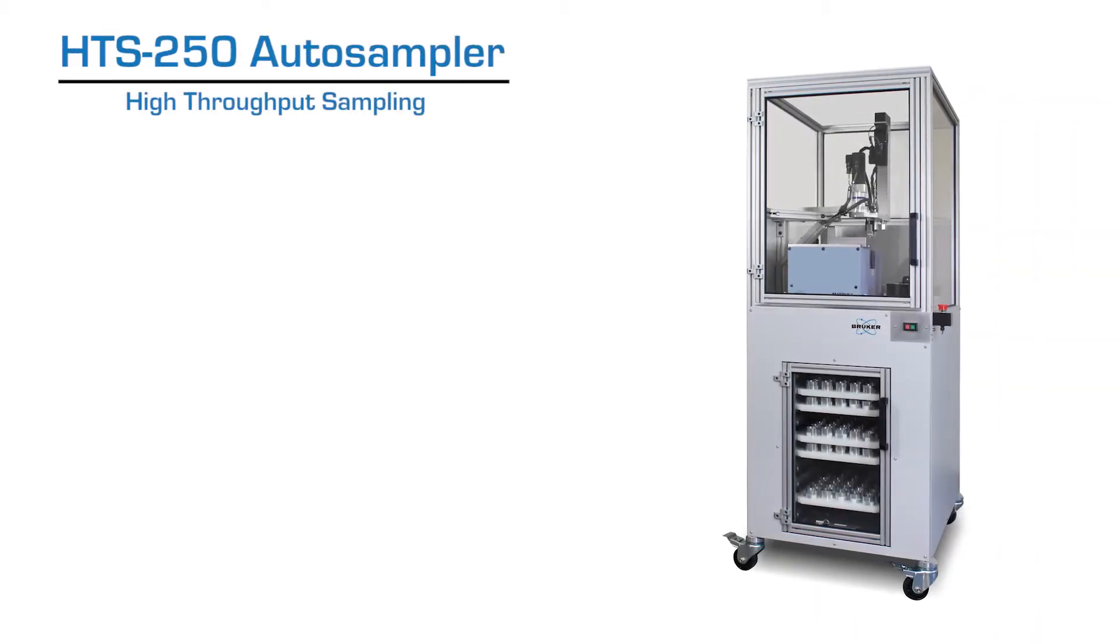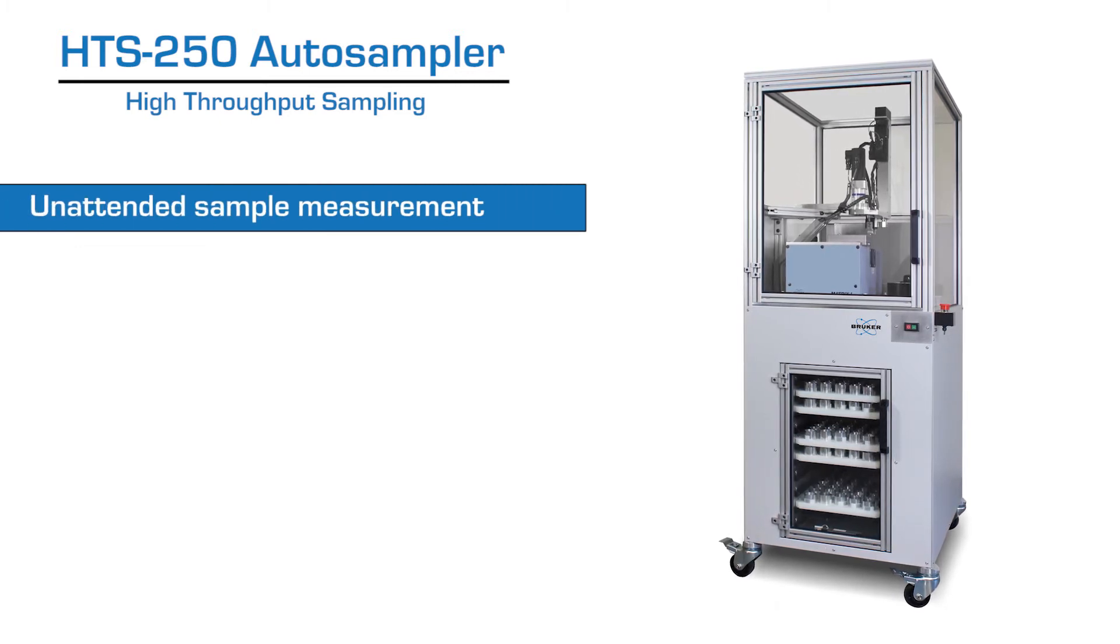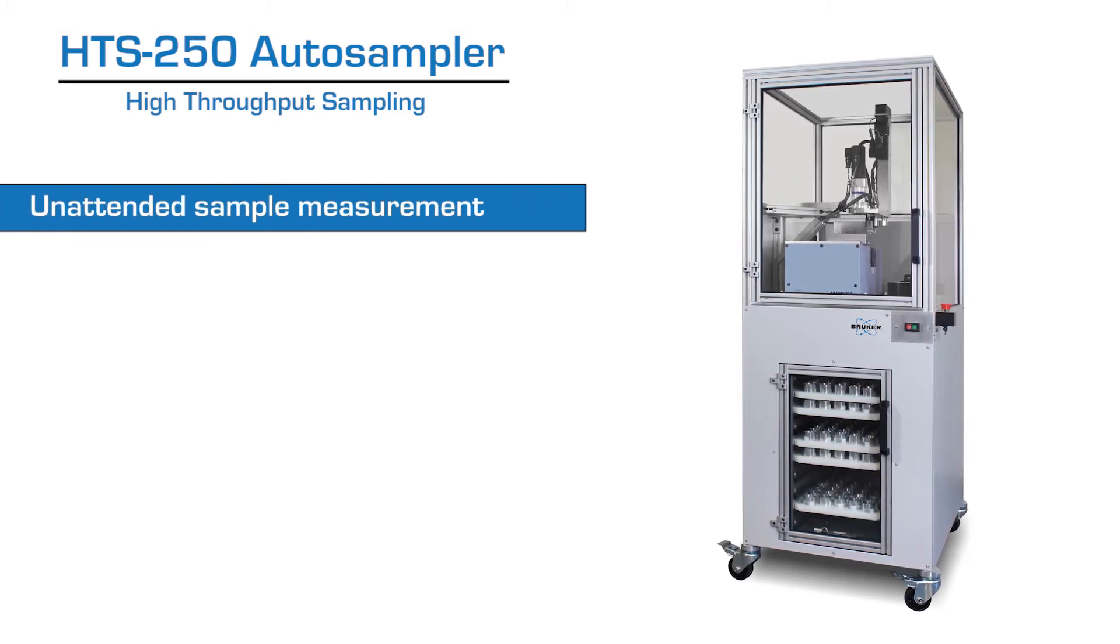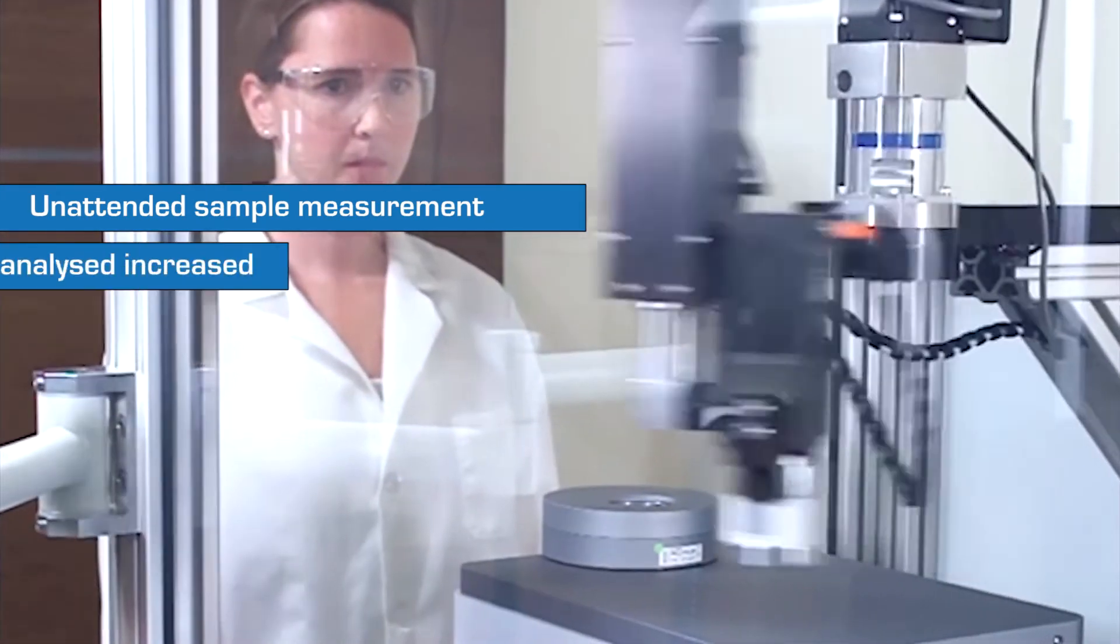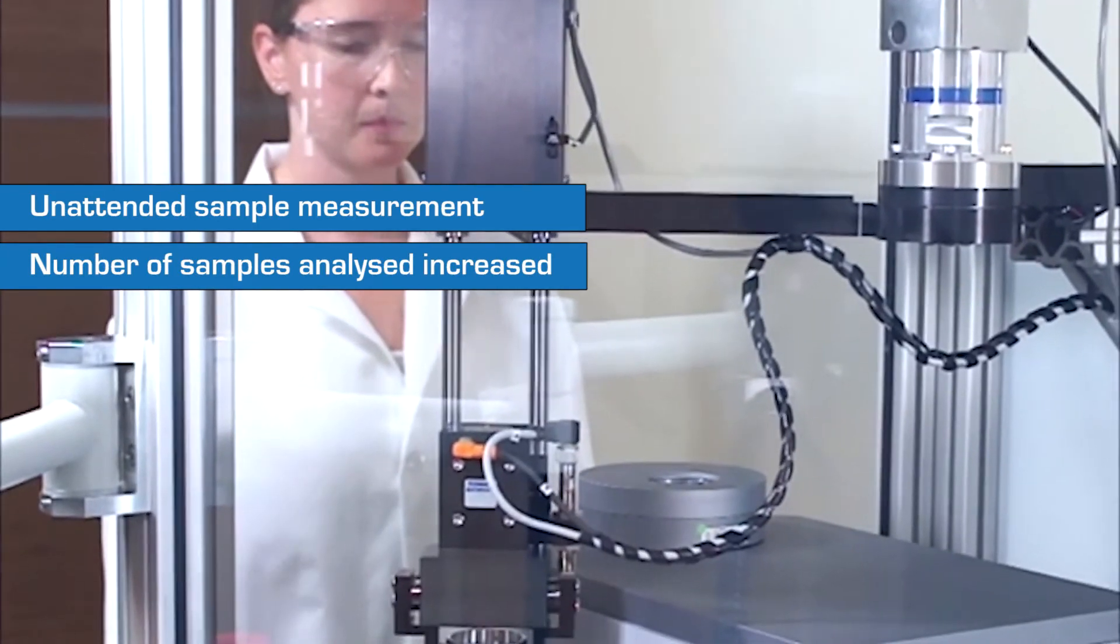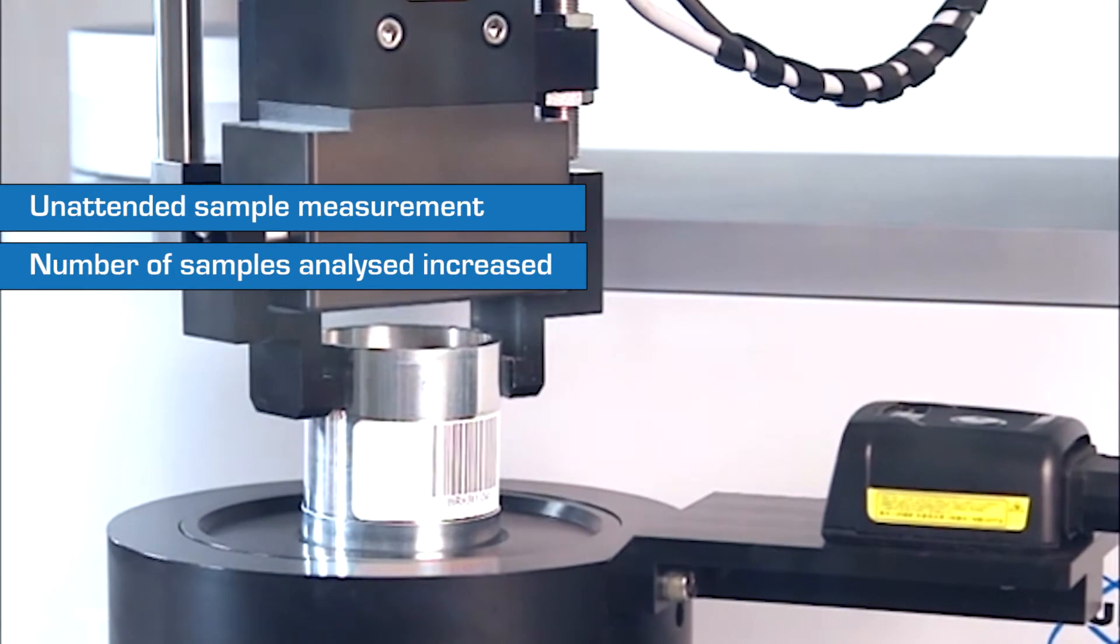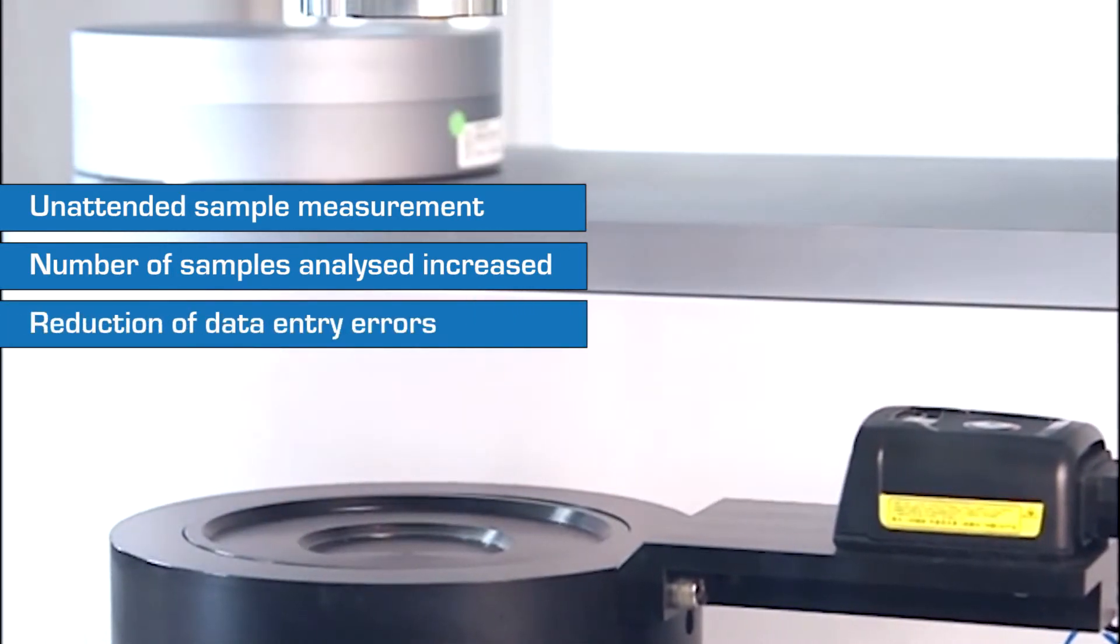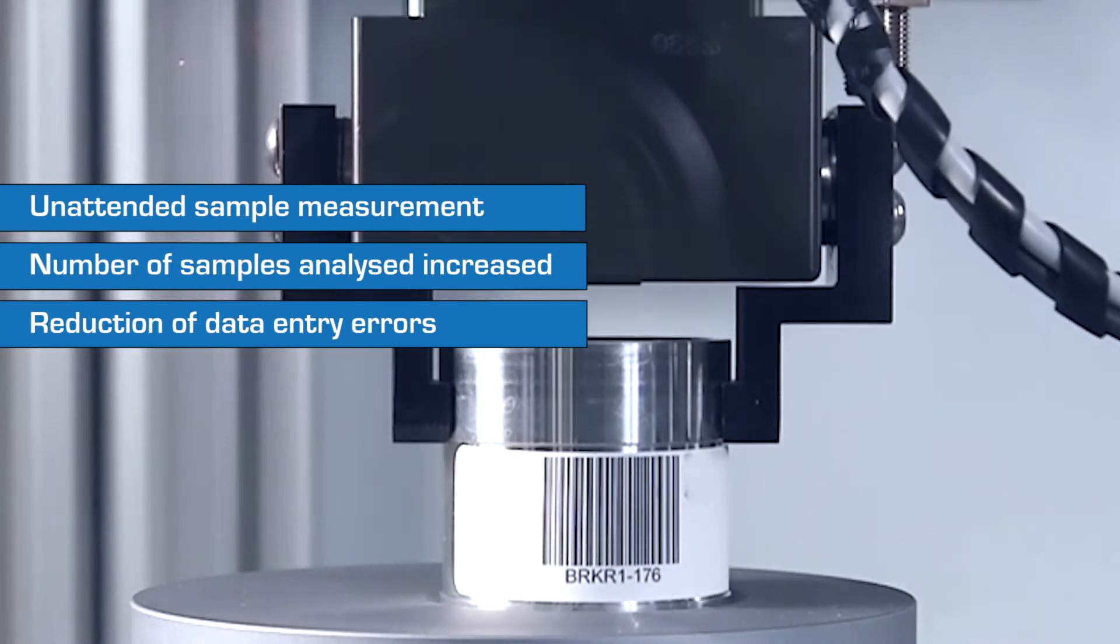Some of the benefits of the HTS 250 include unattended sample measurement and evaluation, freeing laboratory staff to focus on other value-added activities, significant increase in the number of samples analyzed from an individual ingredient delivery or product batch to more accurately profile consistency and quality, and reduction of data entry errors by decoupling data entry and sample measurement functions.